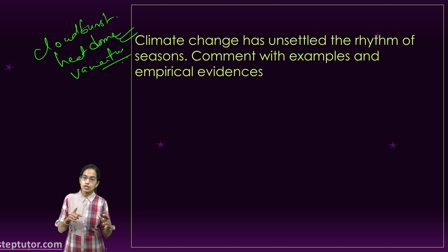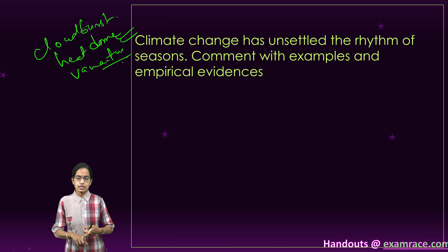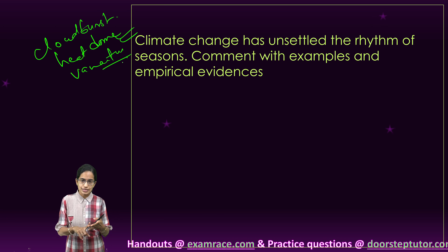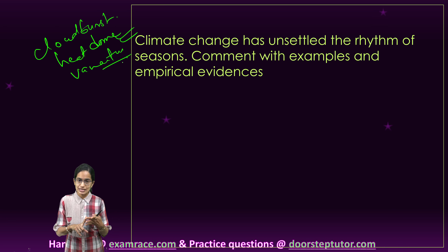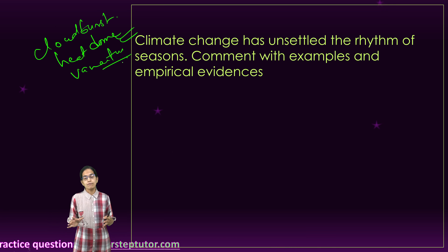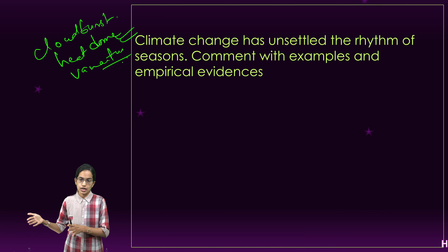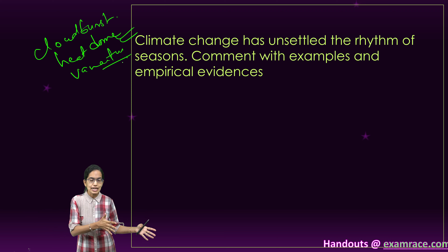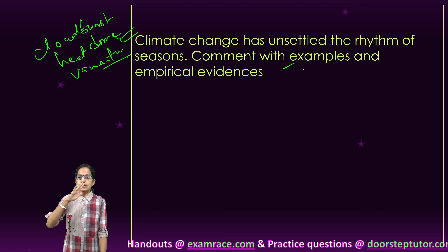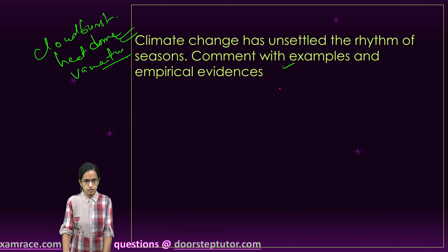Then we have coastal impacts, extreme hot weather phenomena, unexpected rainfalls, cloudbursts, avalanches, increasing rising temperatures, and rising sea levels. Various factors have been impacting not only the growing seasons — the spring coming much earlier, the monsoon seasons getting delayed — all these are examples we explain under climate change and the unsettled rhythm of the seasons.